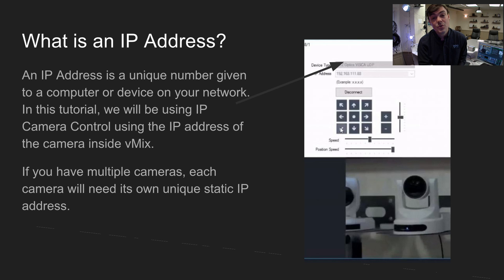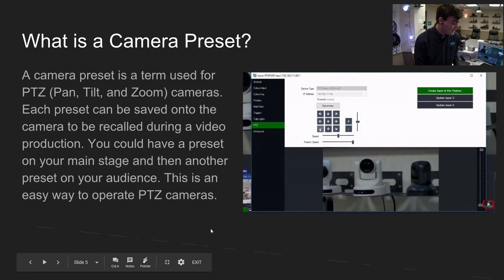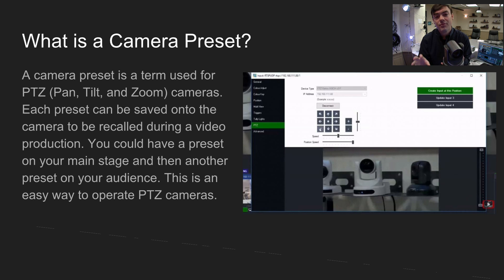Every PTZOptics camera has an IP address — a unique address that devices on your local area network can have — and that's how you access them through a web browser or video production software. The best way to control PTZOptics cameras is over the network, and to do that we need to set a static IP address for each camera so we can control them separately. A camera preset is a preset position: preset one could be a zoomed-in shot of the guitarist, preset two the drummer, preset three a wide shot.